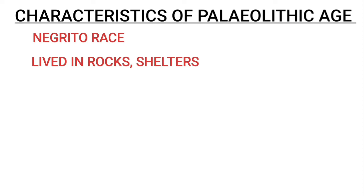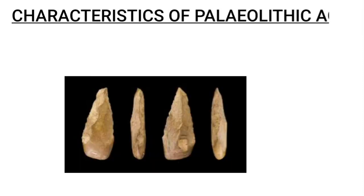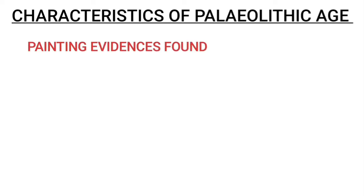Food gatherers in this period ate wild fruits and vegetables and largely survived on hunting. There was no knowledge of agriculture or houses. Only later, fire was introduced in the upper Paleolithic age, and painting evidences were found. Humans used unpolished rough stones like hand axes, blades, and choppers. Paleolithic men were also known as quartzite men due to the largely used weapons made of quartzite.